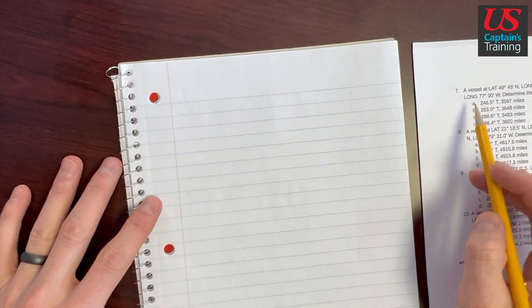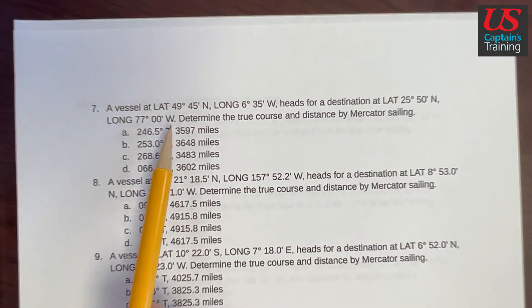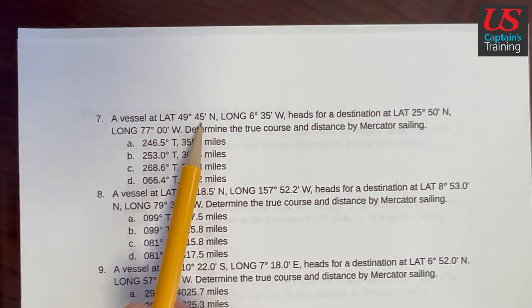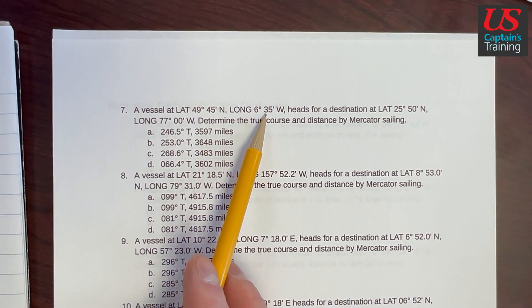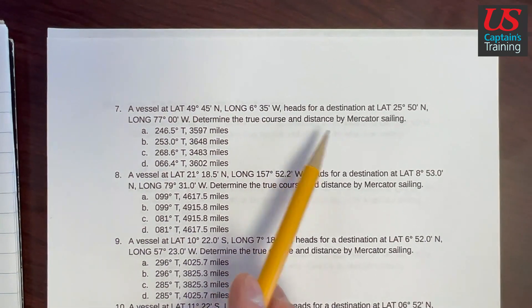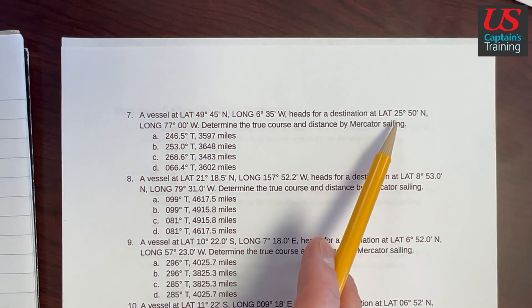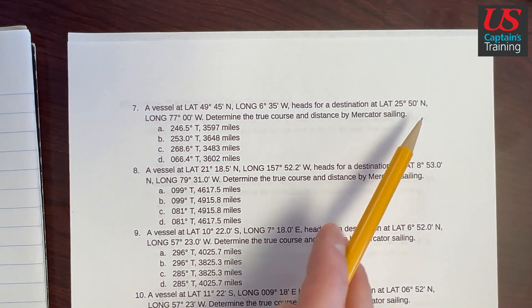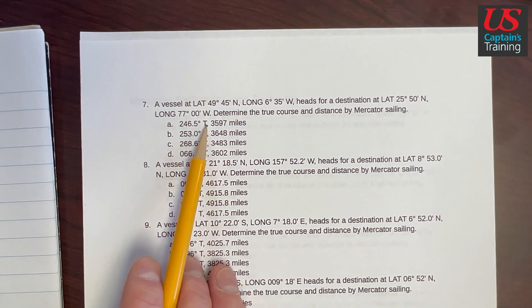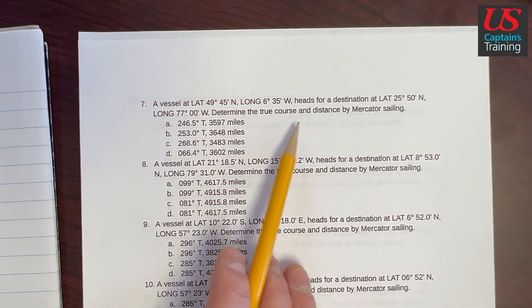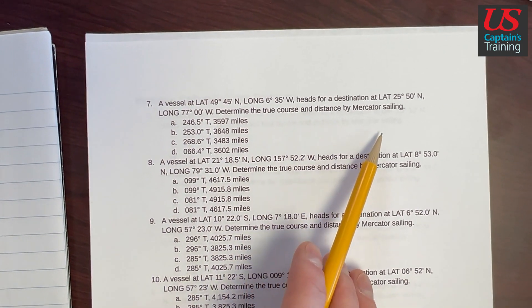Mercator Sailing practice problem seven. A vessel at latitude 49 degrees 45 minutes north, longitude 6 degrees 35 minutes west, heads for a destination at latitude 25 degrees 50 minutes north, longitude 77 degrees zero minutes west. Determine the true course and distance by Mercator Sailing.